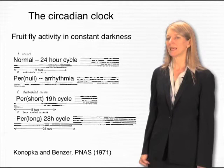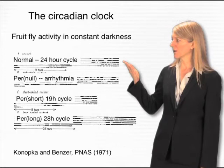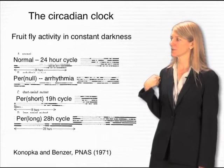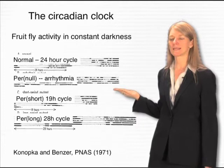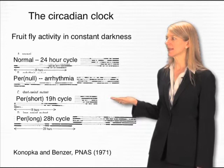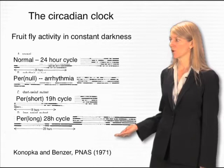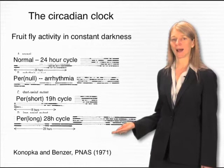Seymour Benzer and Ron Konopka decided to look for genes that affected the circadian clock in fruit flies by searching for fruit flies whose 24-hour cycle was abnormal. They identified many classes of mutant fruit flies: flies that had no rhythm at all and would just fly around or sit still at random; flies with a short cycle that, in constant darkness, would cycle over as few as 19 hours instead of 24; and conversely, flies with a long cycle of 28 hours or more. You can think of the 19-hour flies as early risers and the 28-hour flies as those who like to stay up late.